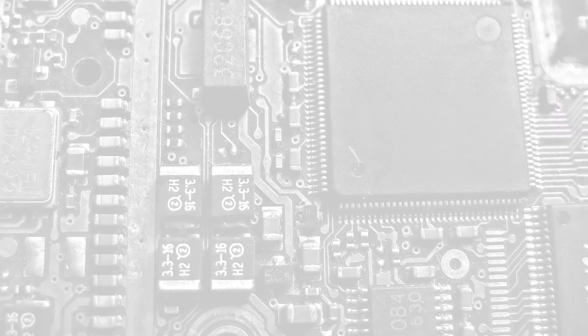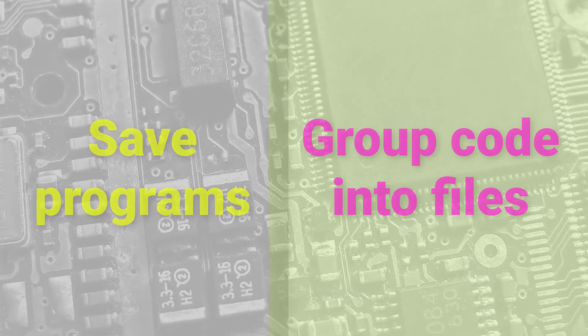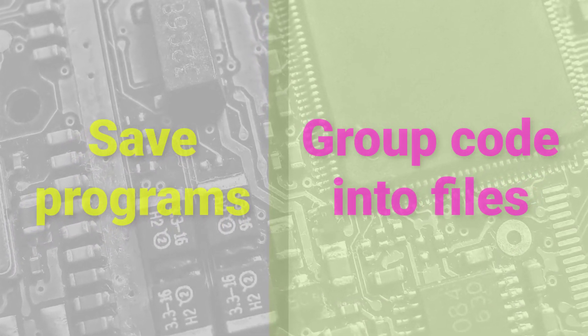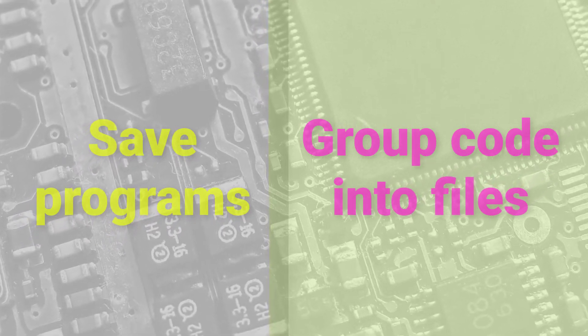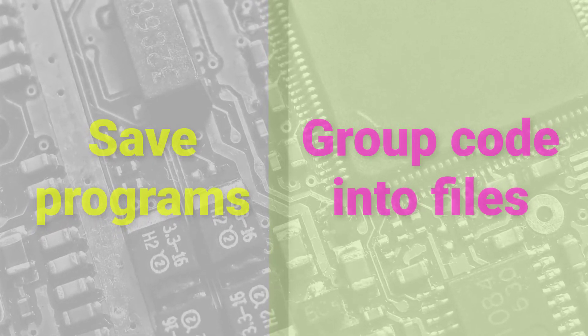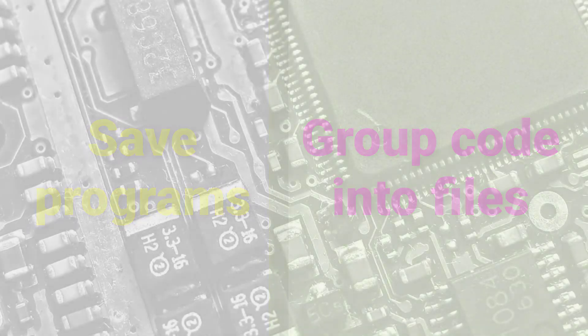Now we will show how to save the command to a file, which enables us to do two important things. Number one, it allows us to save our programs so we can run them at a later time. And number two, it allows us to group our code into files, giving us the ability to create distinct programs. Saving programs to files is how we begin to build more sophisticated programs, and log messages like Hello World become necessary for us to know what our programs are doing.